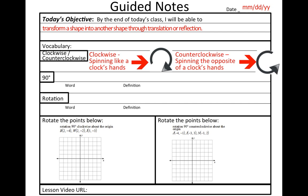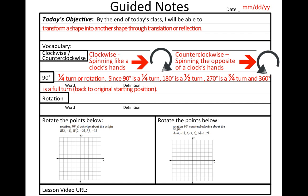The next vocabulary word we have is 90 degrees. 90 degrees is a quarter rotation. And so since 90 degrees is a quarter rotation, then 180 degrees is a half, 270 is three quarters, and 360 is a full rotation back to the original starting position.